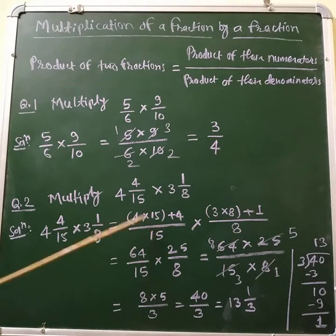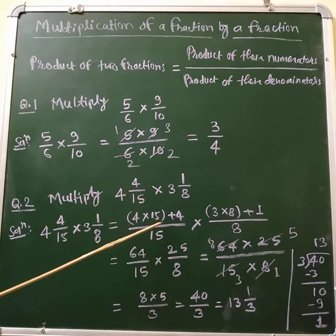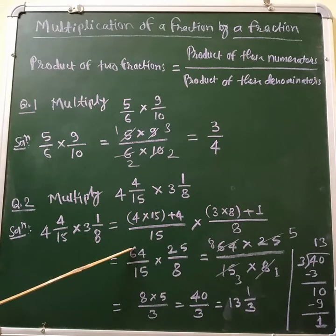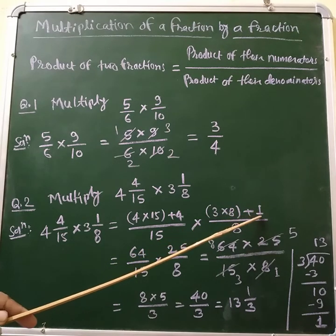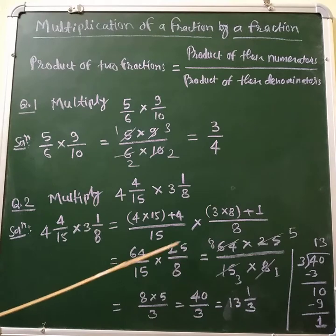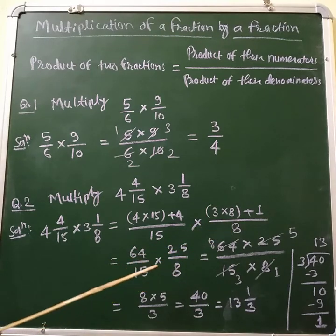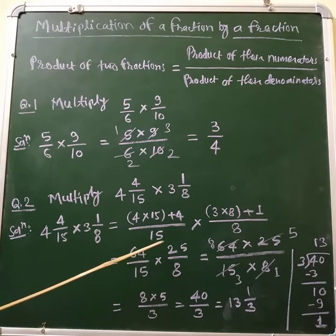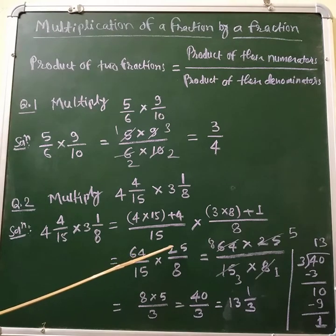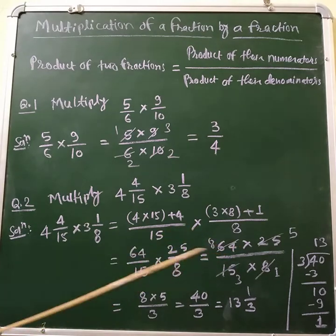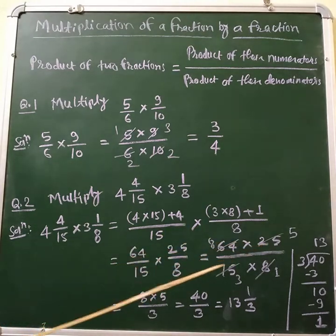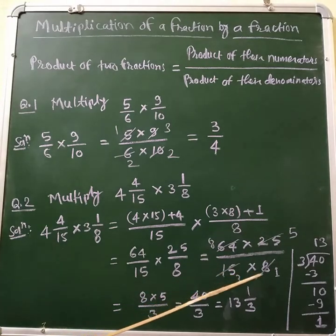Now we calculate: 4×15 is 60, plus 4 is 64, so the first fraction is 64/15. For the second: 3×8 is 24, plus 1 is 25, so the second fraction is 25/8. Now we write the multiplication as 64 multiplied by 25, divided by 15 multiplied by 8.